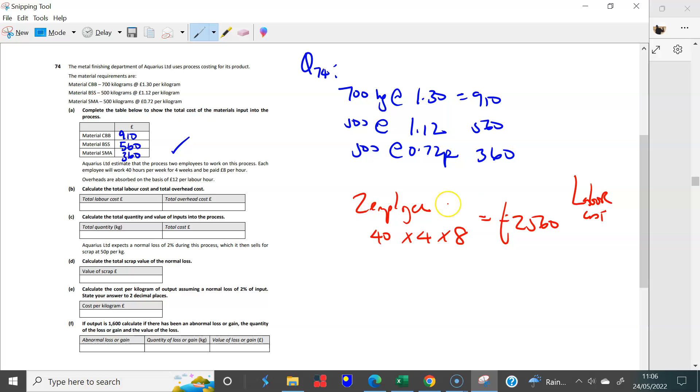Then it says that overheads are absorbed. So this is labor, and then let's look at overheads. Overheads are absorbed at £12 per labor hour. So the question here is, how many labor hours do we have? So you have 40 hours a week times 4 weeks and times 2 employees. So you have 2 employees, each of them doing 40 and 4, as in 40 hours per week, and then you have 4 weeks times 2. And then you're absorbing at £12 an hour. So in terms of overhead cost, I have 40 times 4 times 2 times 12. And then I have here 3,840. So that's how I calculated my overhead cost.